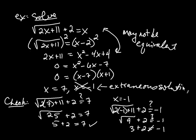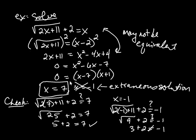An extraneous solution is a solution that appears using the technique of squaring both sides to solve equations involving radicals. It may satisfy the squared equation, but it may not satisfy the original. However, x equals 7 does work, so we keep that one. To recap: whenever you solve a radical equation, first isolate the radical, then square both sides — but squaring may introduce extraneous solutions, which is why you have to check all the numbers you end up with.